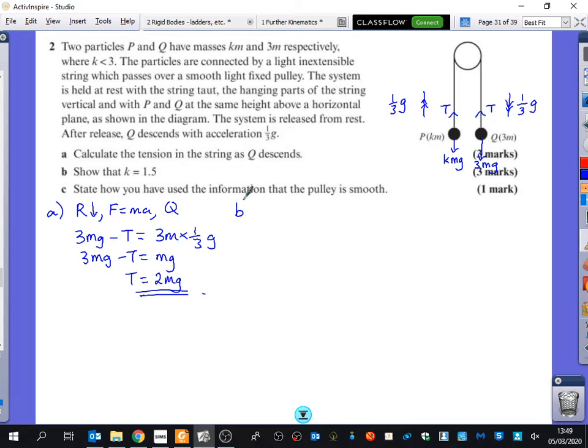Part B of the question. Well, I've already done the, what was this thing called? F equals ma. What was the posh phrase we called for that that you might see in an exam question? An equation of motion. An equation of motion, good. So I'm now going to do an equation of motion for particle P. Which direction will I resolve? Yep, I'm going to resolve upwards, because that's the way it's moving. And I'm going to do F equals ma. And I'm going to do that for particle P.